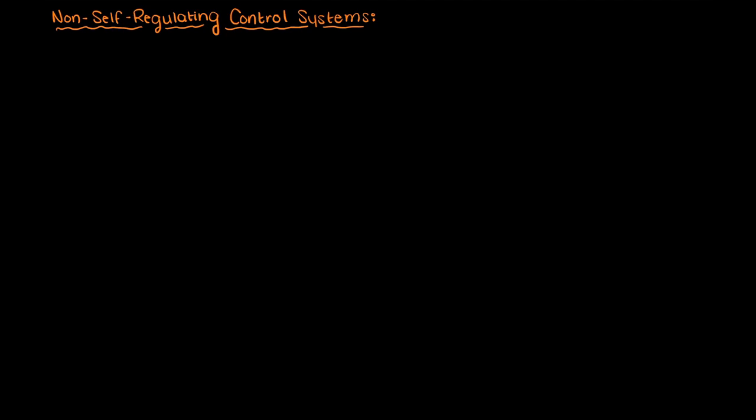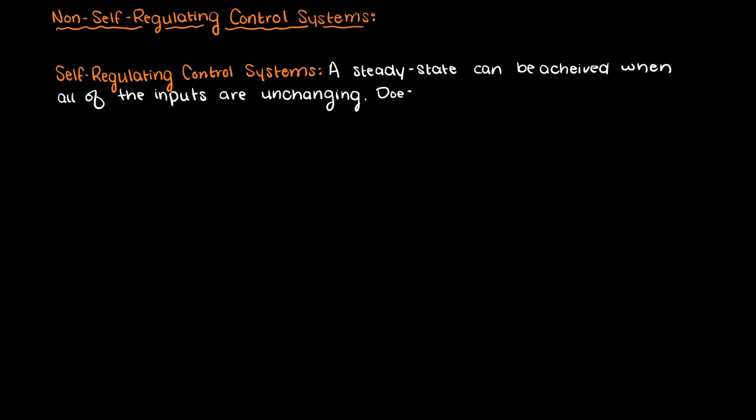In the previous video we talked about self-regulating control systems, in which a steady state can be achieved when all of the inputs are unchanging. So, a self-regulating control system does not require any user input to reach a steady state.